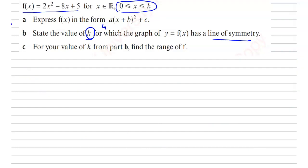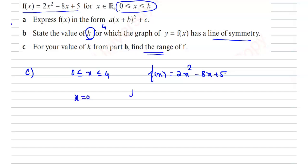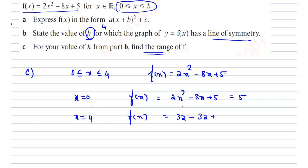The third question: we have obtained the domain as 0 less than or equal to x less than or equal to 4, where f(x) equals 2x squared minus 8x plus 5. We have to find the range. Substituting the lower limit x equal to 0: f(0) equals 5. Taking x equal to 4: f(4) equals 2 times 16 minus 32 plus 5, which is 32 minus 32 plus 5 equal to 5. So at both x equal to 0 and x equal to 4, f(x) equals 5.